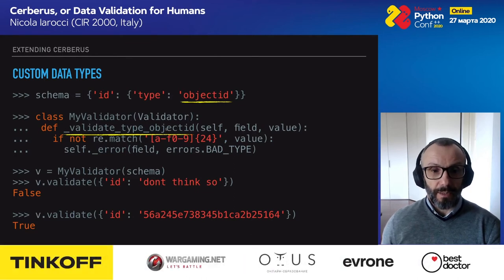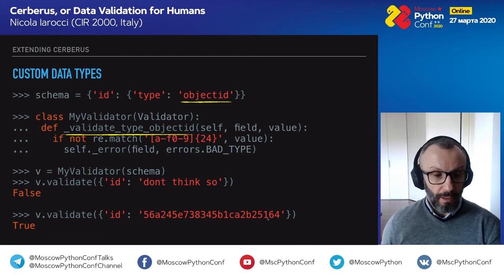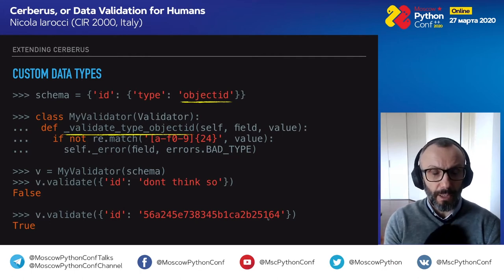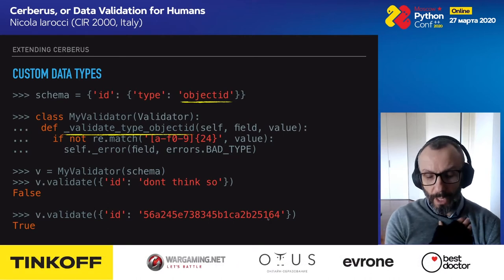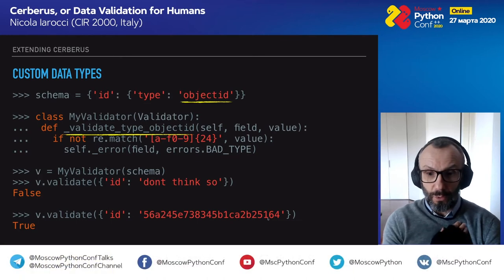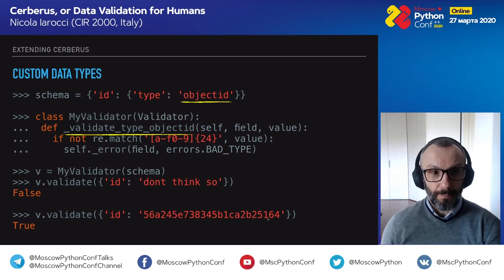You can also build custom data types — for example, an ObjectId type that can be validated against your documents to ensure an id field is actually a valid ObjectId. Note that this example is somewhat outdated; in newer versions of Cerberus there is a type registry where you can register new types much more easily. Go check the documentation for the better, modern way to add custom types to your validation rules.